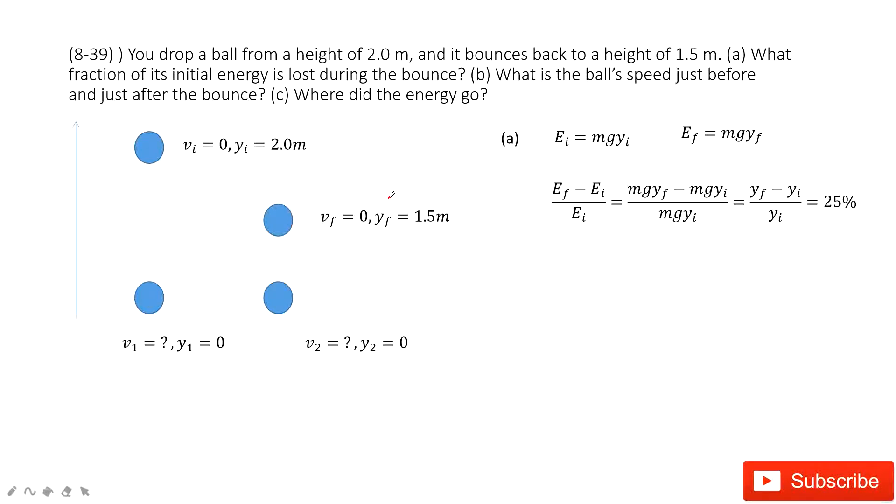Welcome to my channel. I'm Zhang Zingshu. Let's look at problem 39 in chapter 8. This chapter is about the conservation of energy. As you can see, we have a ball. You drop a ball from an initial position of 2 meters with initial velocity 0, and then it drops to hit the ground.